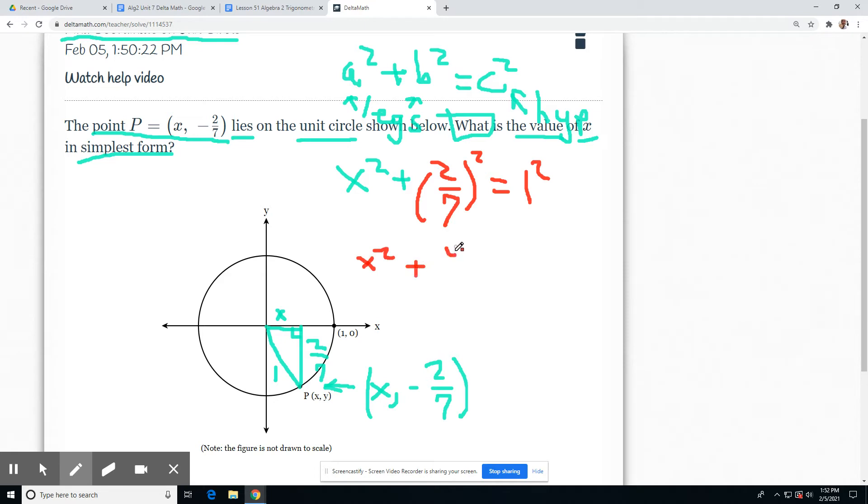X squared plus 4 over 49. Top and bottom get squared. Equals 1 minus 4 over 49. 1 minus 4 over 49 is X squared equals. I'll call that 49 over 49 is 1 minus 4 over 49. Subtract the tops and I get 45. 45 over 49.